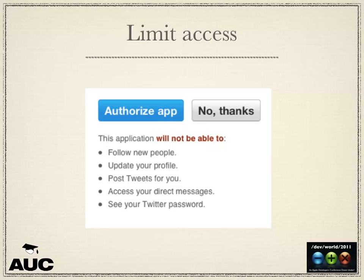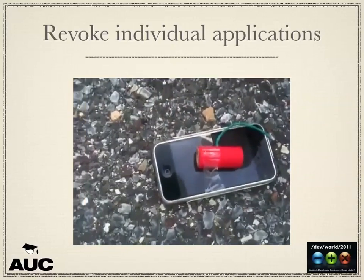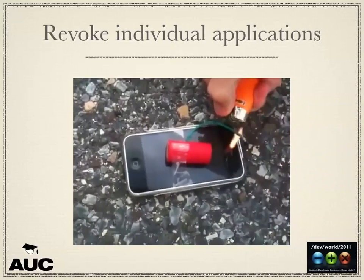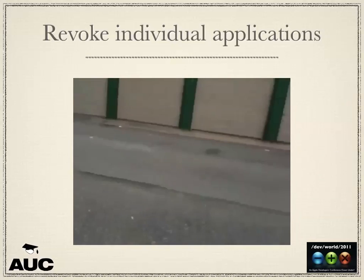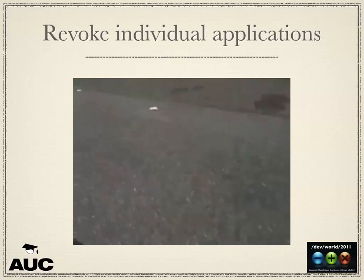One really cool thing you can do with token-based auth is that the service remembers all the tokens it's issued. If a user loses their phone or it gets stolen, they can revoke access to a particular device or application. So instead of having to change your password or ban someone, you simply go into Facebook or Twitter and remove the application.